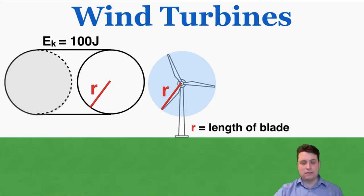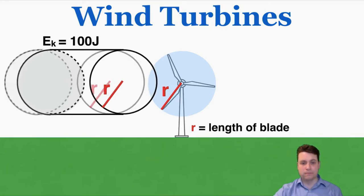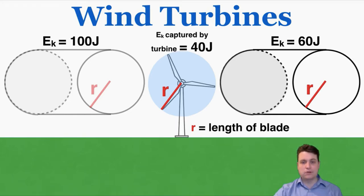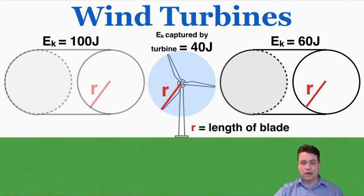Imagine this cylinder has a kinetic energy of 100 joules. If it passes through the wind turbine to the other side and is moving a little slower — say it now has a kinetic energy of 60 joules — then 40 joules of energy must have been captured by the wind turbine. So if we find the total energy before and after the air goes through a wind turbine, whatever difference exists has been captured by the turbine. Here the wind turbine captured 40 joules of kinetic energy.